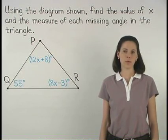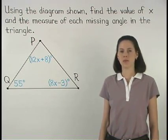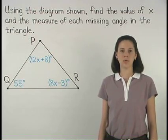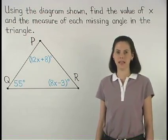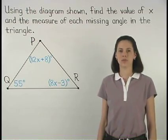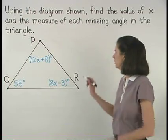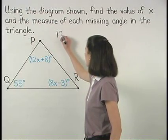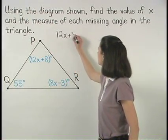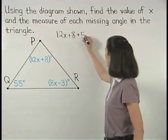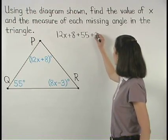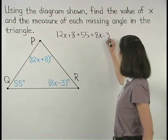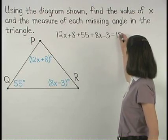Remember from the previous example that the measures of the angles of a triangle always add to 180 degrees. So we can set up the equation 12x plus 8 plus 55 plus 8x minus 3 equals 180.